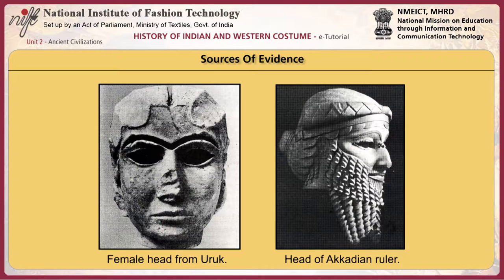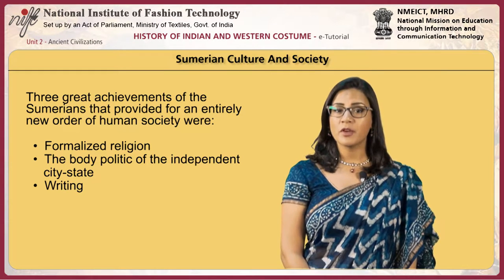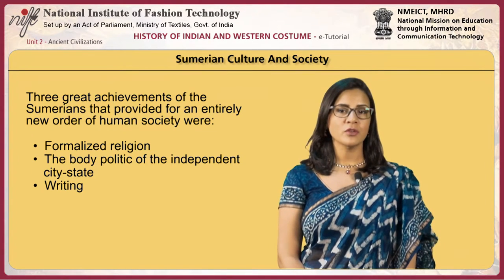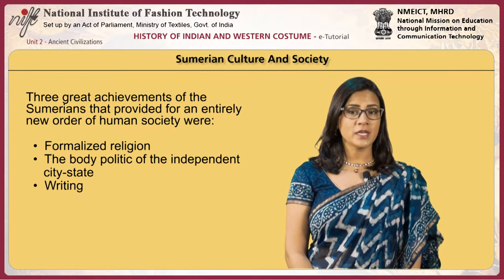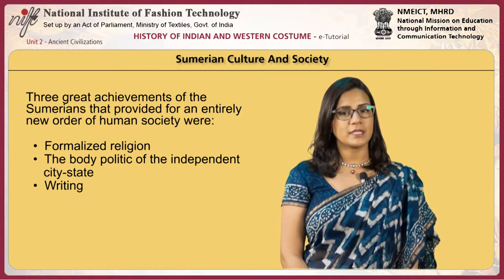Sculptures of figurines, statues, wall decoration, relief work, and motifs found on pottery and other applied arts provide the largest source of information about the art, culture and artistic style of Mesopotamian culture. The three great achievements of the Sumerians that provided for an entirely new order of human society were formalized religion, the body politic of the independent city-state, and writing.